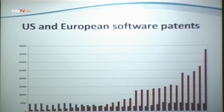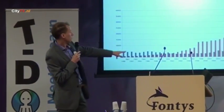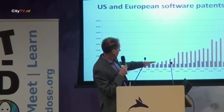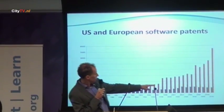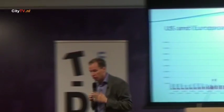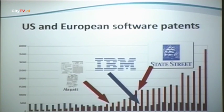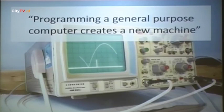Of course Microsoft wasn't the only one doing this. More and more patents were being applied for, which you can see in the number of software patents - red bars for the US, blue bars for Europe - with a big rise in the early 90s, in the 2000s, and again in 2006. There were three distinct court cases that determined the scope of patent law: the Alapat case in the US, the IBM case in Europe, and the State Street Bank case in the US.